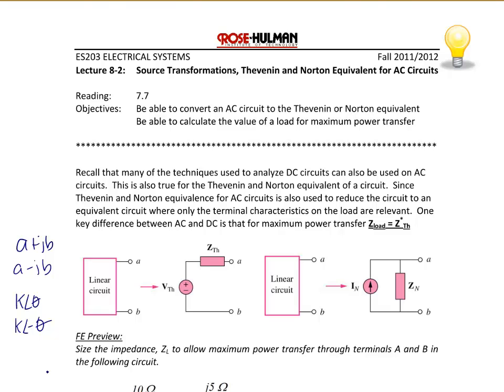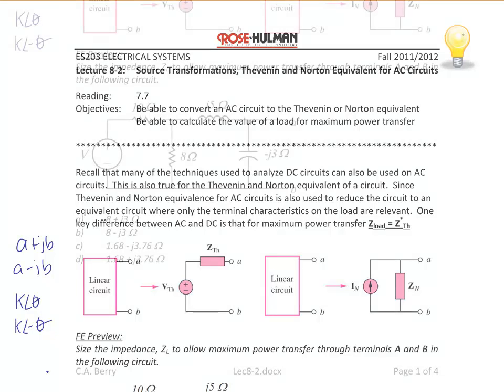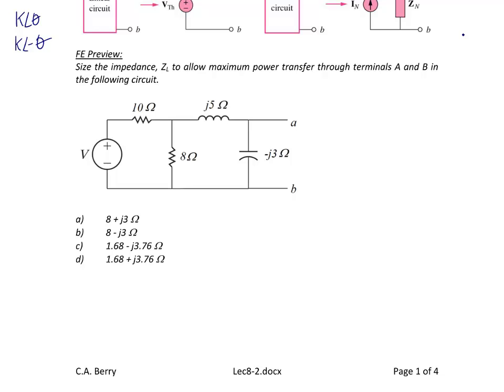Now let's try an example. Let's look at the following FE preview problem: size the impedance Z_L to allow maximum power transfer through terminals A and B in the following circuit. Recall that to find the Thevenin impedance, the first thing you want to do is turn off the independent sources and find the equivalent impedance seen by terminals A and B.